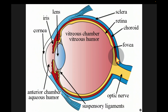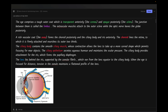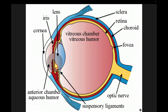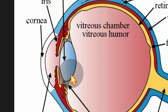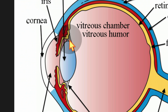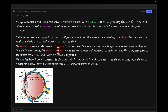Inside the outer wall is the middle layer called the uvea. The uvea forms the choroid posteriorly and the ciliary body and the iris anteriorly. The ciliary body contains smooth muscle, and its contraction allows the lens to assume a more globular shape, focusing on near objects. When the ciliary body contracts, the zonules relax, allowing accommodation.